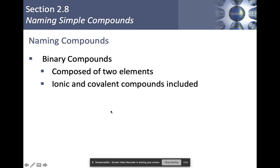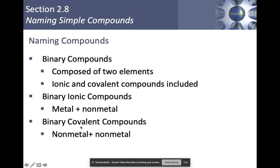So how do we name compounds? For binary compounds, they're composed of two elements. Ionic and covalent compounds are included in binary compounds here. Binary ionic compounds are made up of a metal and a non-metal. Covalent compounds or covalent molecules are made up of non-metals only. That zigzag line makes the big difference. If you have something from the left side combined with the right side, you have a binary ionic compound.